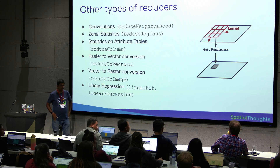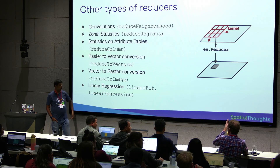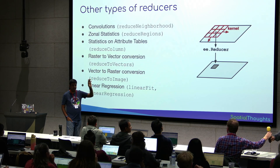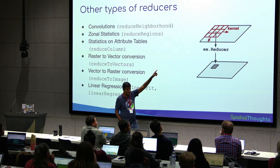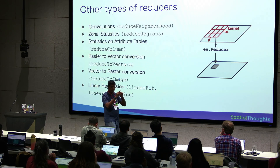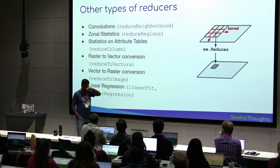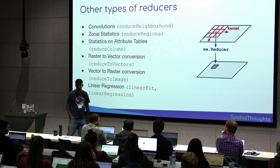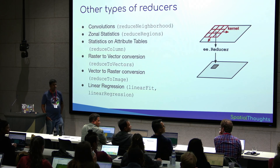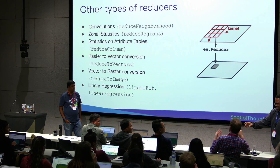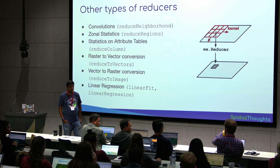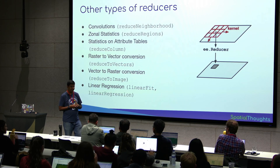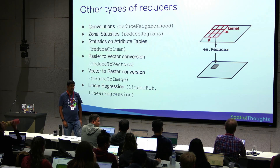How does something like reduce neighborhood work with parallel processing where it's cutting sections up — what happens if that neighborhood goes over the edge? At the edge, if you are at the top-left pixel, you do not have the edge pixels to compute the neighborhood. So when you run reduce neighborhood, you get an image with one pixel less — it just ignores that region where there's no data. And for the internal tile boundaries in Earth Engine's parallel processing, I think the implementation includes some overlap between tiles so you don't get a tile effect, but I'm not sure exactly how it's implemented.